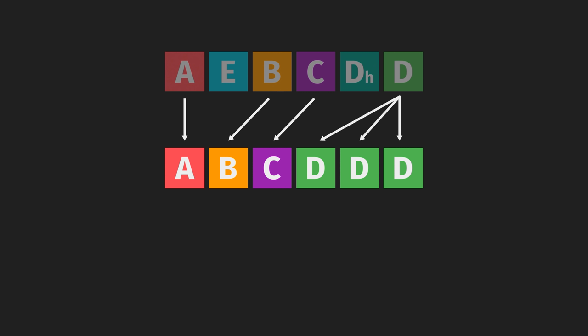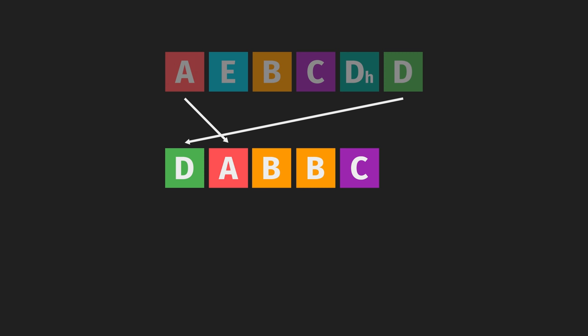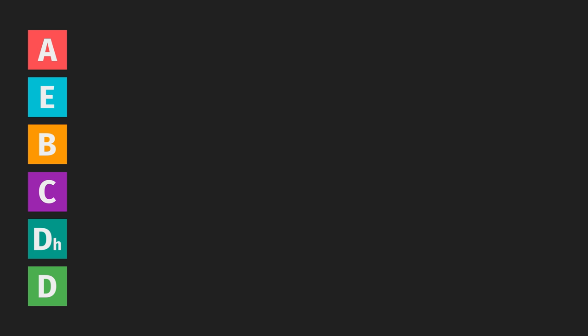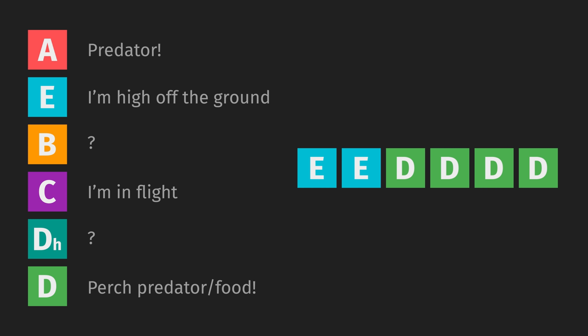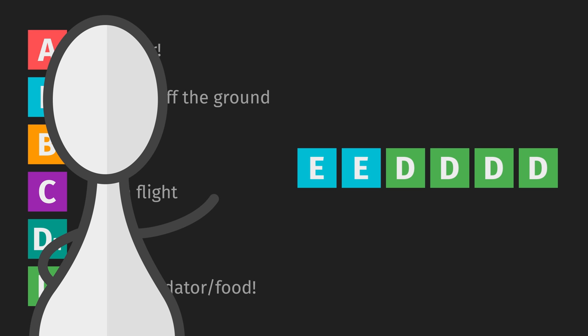Repetition and deletion is permitted, so certain combinations could be grammatical chickadee calls, but breaking that grammatical order would not be. Each note appears to have a distinct meaning. Scientists have found that calls become more A-note heavy when a predator is approaching, E-note heavy calls signal the chickadee is higher off the ground, C-note heavy calls indicate it's in flight, and D-note heavy calls signal a perch predator or food has been detected. So something like that could mean: I'm flying around up here and have sighted some food. How cool is that?